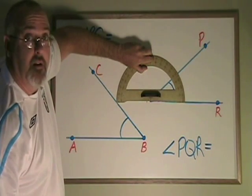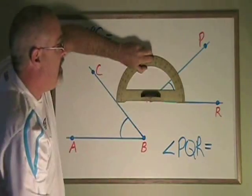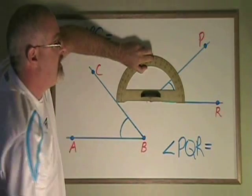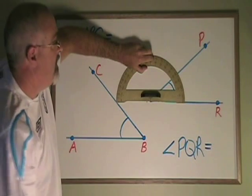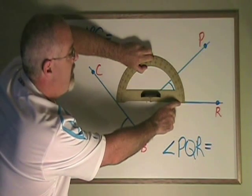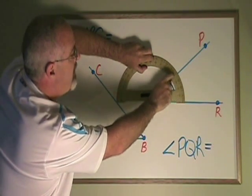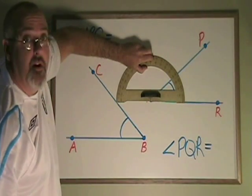Because we are measuring an angle that opens to the right, we have to use the inner set of numbers, because we always measure angles by counting up from zero. The inner set of numbers starts at zero. And if I count up, I can see that this angle is about 39 degrees.